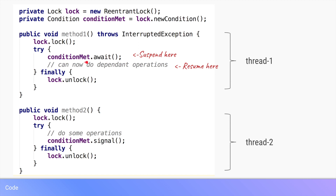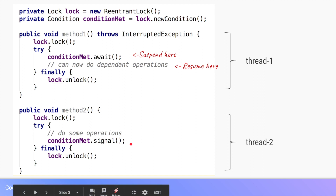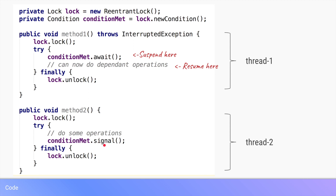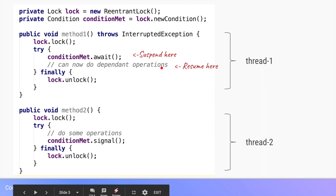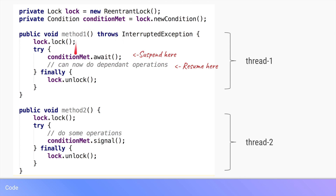Thread one will say: wait for this condition to be met — it's awaiting for conditionMet. As soon as it does that, this thread will go into a wait state and suspend at that point. Whenever thread two performs those operations required for that condition to be met, it will say conditionMet dot signal, signaling any thread waiting on this condition. As soon as it does that, the JVM takes thread one out of the wait state and pushes it into the runnable state. Thread two then releases the lock by calling lock dot unlock, and that is when thread one can re-acquire the lock and resume from the exact point where it got suspended — it doesn't have to restart its method.